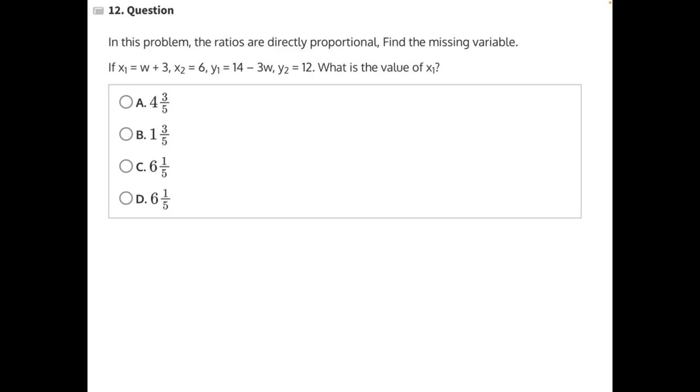In this problem, the ratios are directly proportional. Find the missing variable. If x1 equals w plus 3, x2 equals 6, y1 equals 14 minus 3w, and y2 equals 12, what is the value of x1?